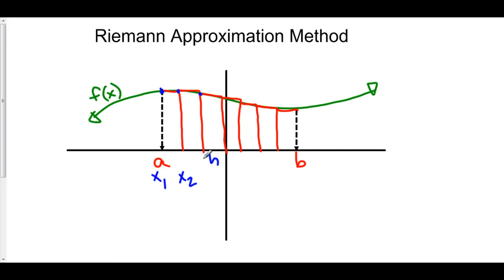Here's our third x value, x sub 3, x sub 4, 5, 6, 7. And here we go all the way up through x sub 8.